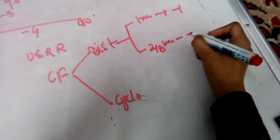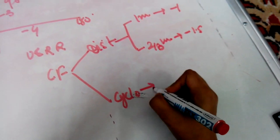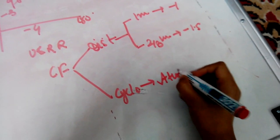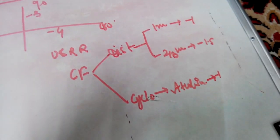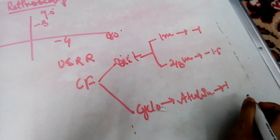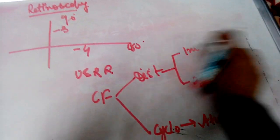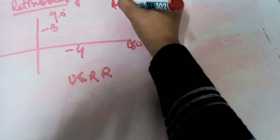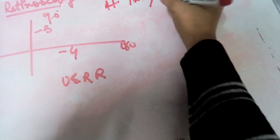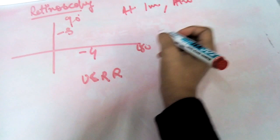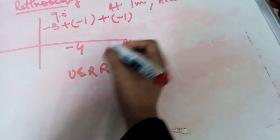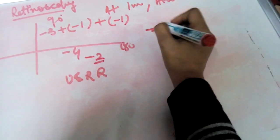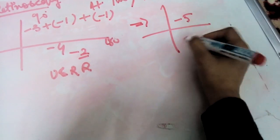For the cycloplegic, we usually use atropine. If atropine is used, the correction factor is minus one. Remember, we always add the correction factor. In our example, if the retinoscopy was done at 1 meter distance and atropine was used, we add minus one for distance and minus one for atropine — a total of minus two. So our readings become minus five and minus four.